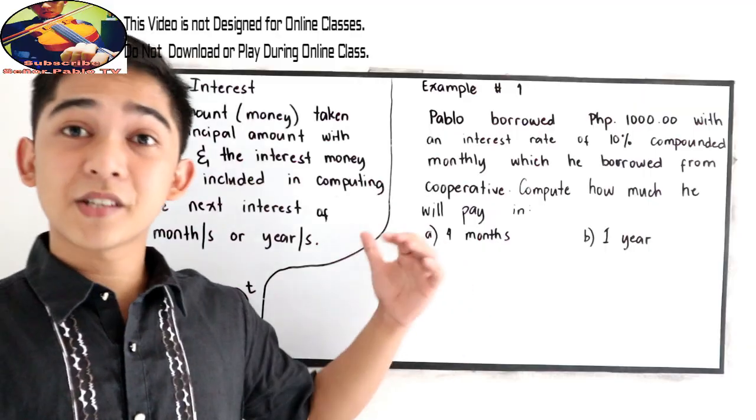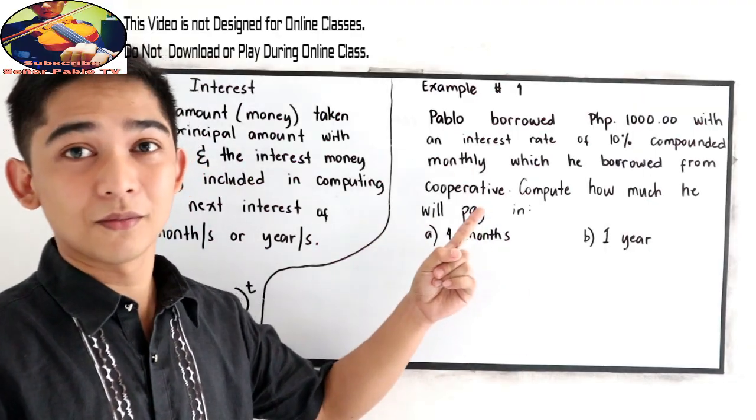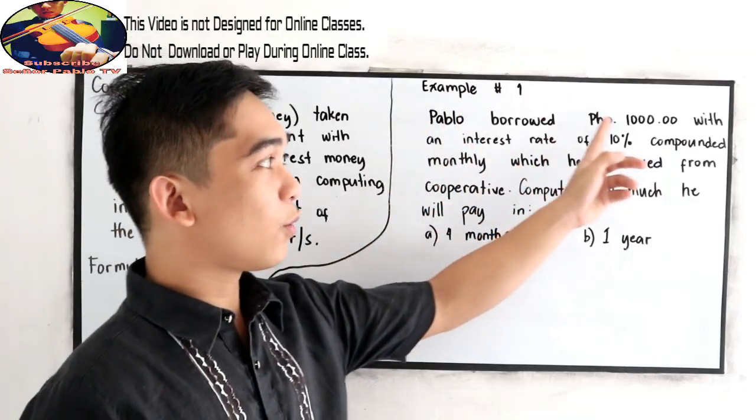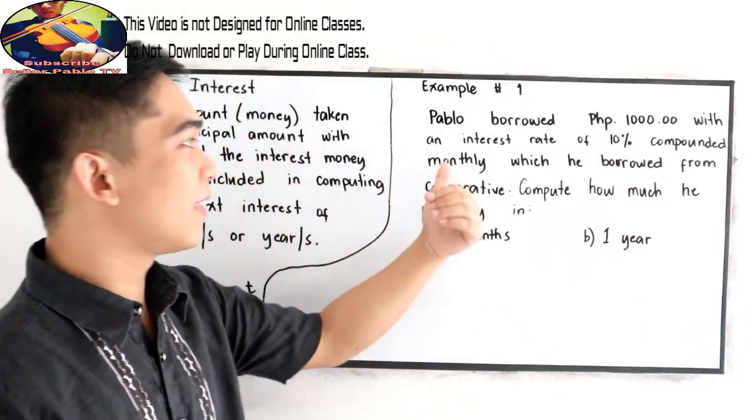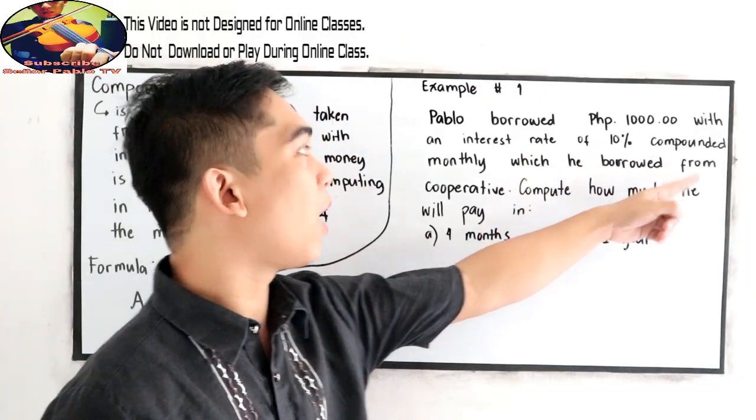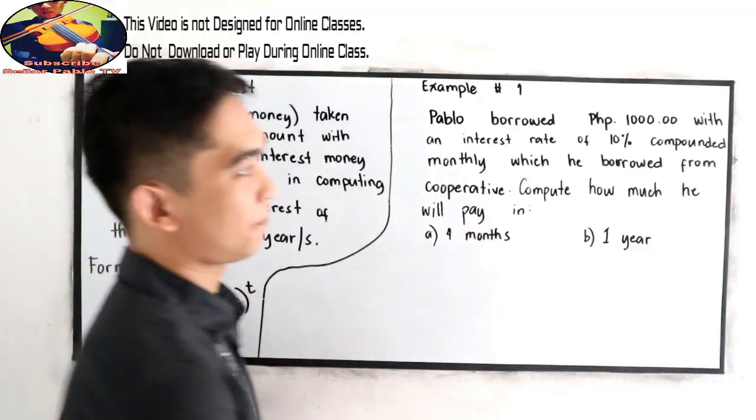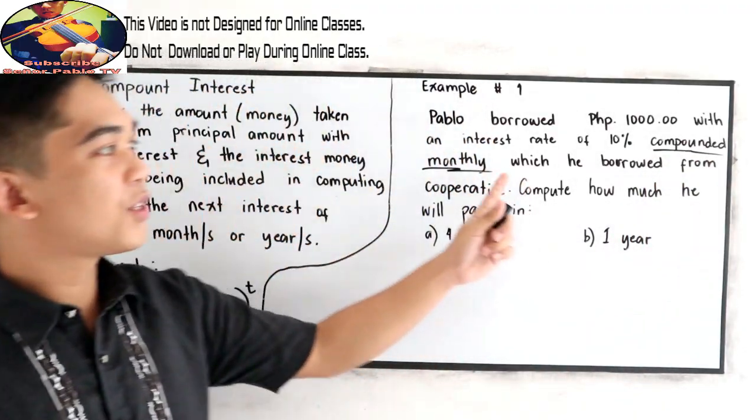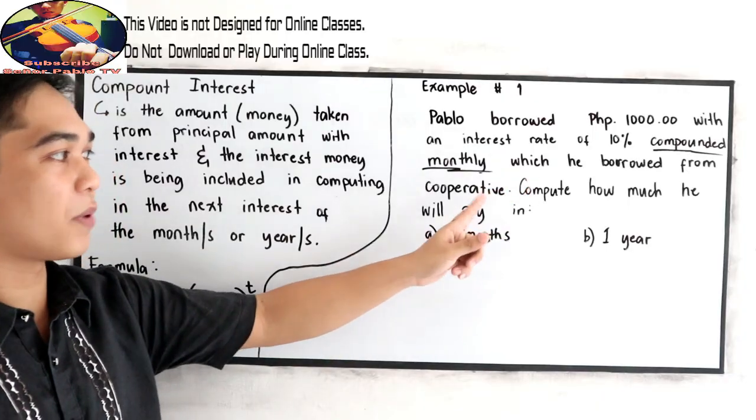To better understand, let's have this example. Pablo borrowed $1,000 with an interest rate of 10% compounded monthly, which he borrowed from cooperative.